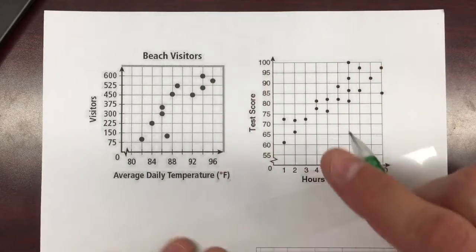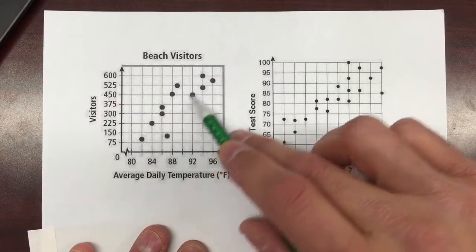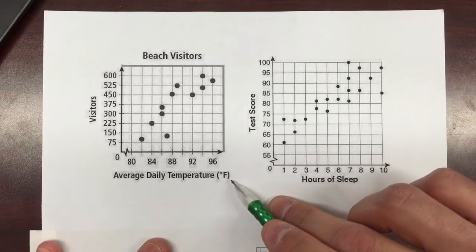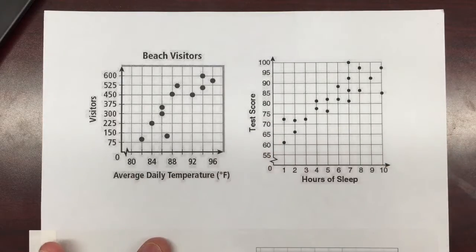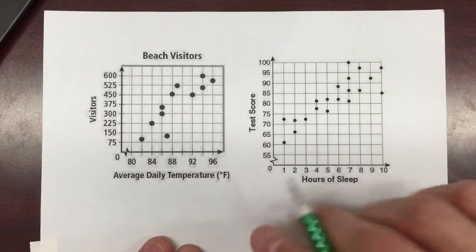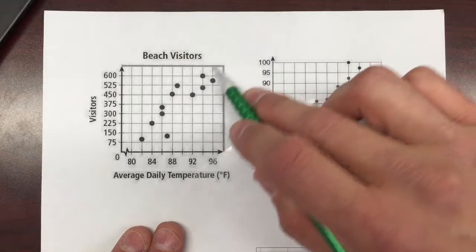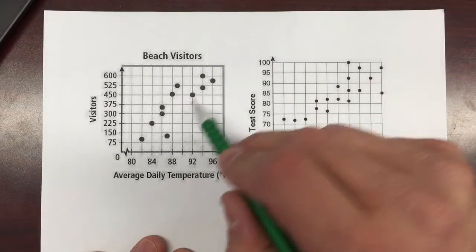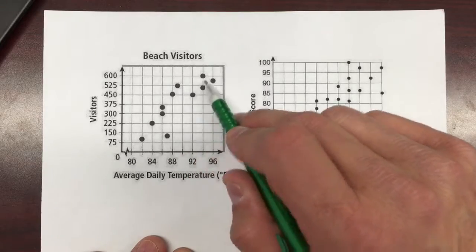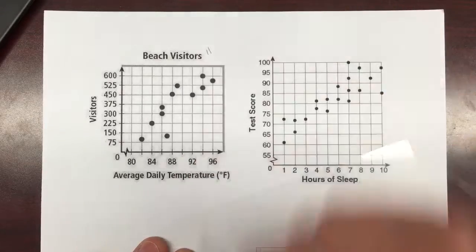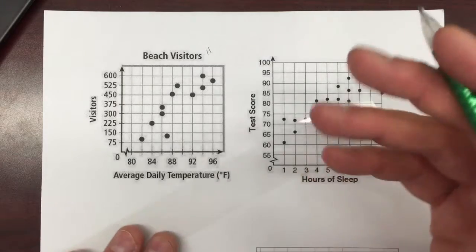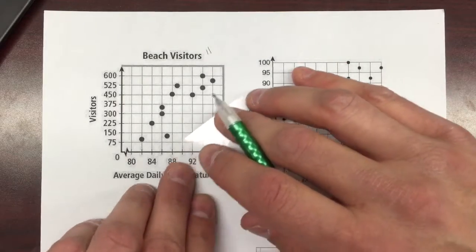So we're going to start this first one with noticing there's definitely a positive correlation here between visitors and the temperature. It seems like the warmer it is, the more visitors you get. So based on that, we're going to definitely want to go up in this direction here. And it seems like if I try and make my line, I've got 11 points here.